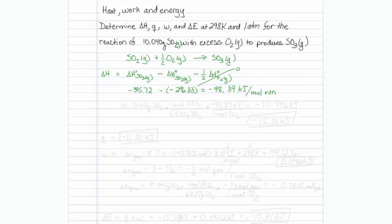The problem is we don't have one mole of SO2. We have 10.040 grams. So we're going to have to scale our value based on the number of moles of SO2 that we have. So 10.040 grams of SO2 times one mole of SO2 is 64.07 grams of SO2 times our minus 98.89 kilojoules. And that's per mole of reaction, which also happens to contain one mole of SO2 in my reaction. I will multiply that out.